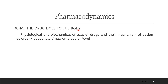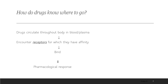What the drug does to the body is called pharmacodynamics. More precisely, pharmacodynamics refers to the physiological and biochemical effects of drugs and their mechanism of action at the cellular, organ, or macromolecular level. When a drug enters the body, it encounters specific receptors for which it has affinity, binds to them, and shows a pharmacological response — but this is only one way; there are many other mechanisms.